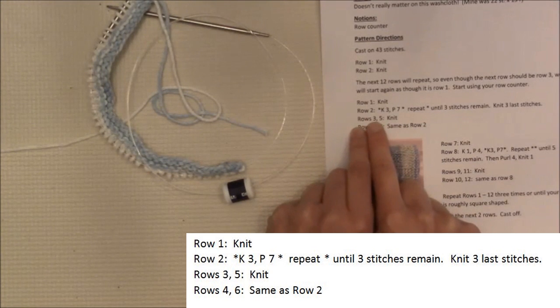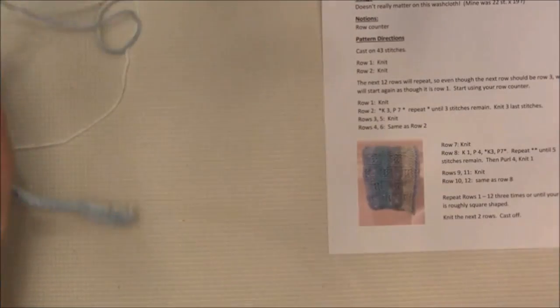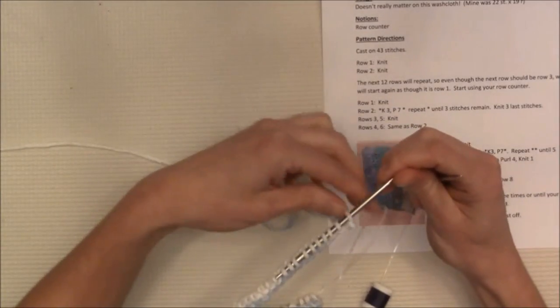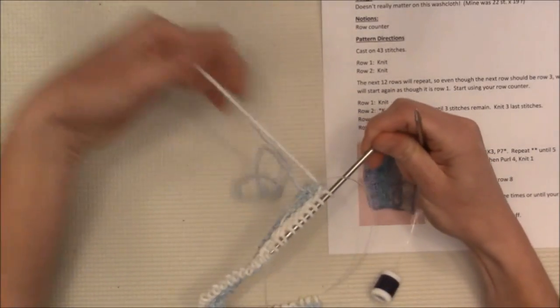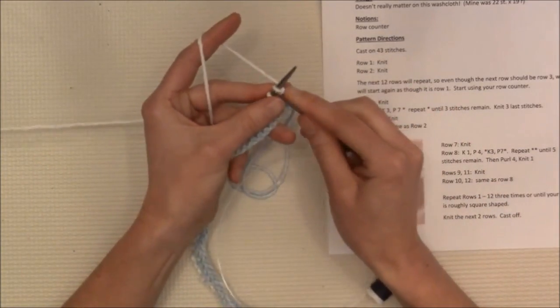So this is row three and it's row five, but let's start with three. Row three: knit. So that is what I want you to do for row three. Grab your work and knit the row. That's what the pattern tells you to do.